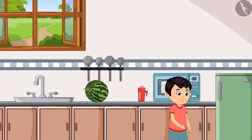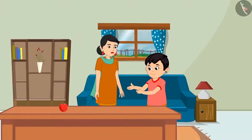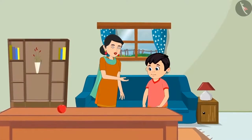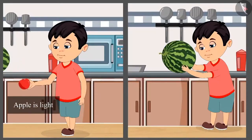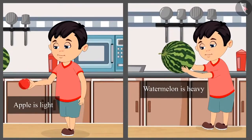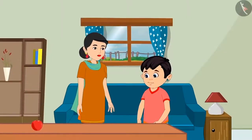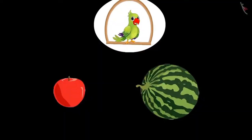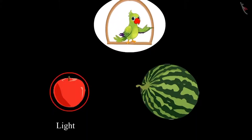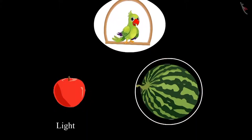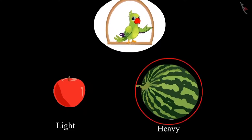Chotu goes to his mother. Mummy, I am not able to lift the watermelon. It's okay, Chotu. The apple is lighter than the watermelon, so you picked it up. But the watermelon is heavier than the apple, that's why you couldn't pick it. So children, did you see? Chotu could pick up the apple because the apple was light, but he couldn't lift the watermelon because it was heavy.